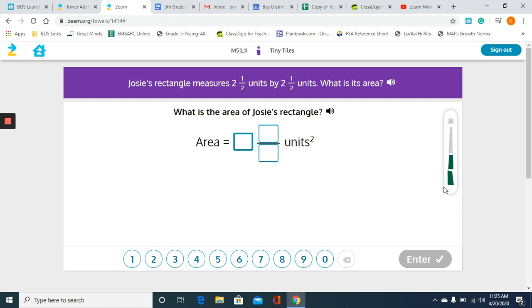So what is the area of Josie's rectangle? We had 1 and 7/8. Actually, so now Josie's rectangle measures 2 and 1/2 units by 2 and 1/2 units. What is its area? We're going to multiply 2 and 1/2 times 2 and 1/2. You can actually change both of those into an improper fraction and just multiply straight across if that's easier. We could change 2 and 1/2 to 5/2 times 5/2, and that would give us, I'm sorry, 25/4. And so 4 goes into 25 six times and there's 1/4 left over.